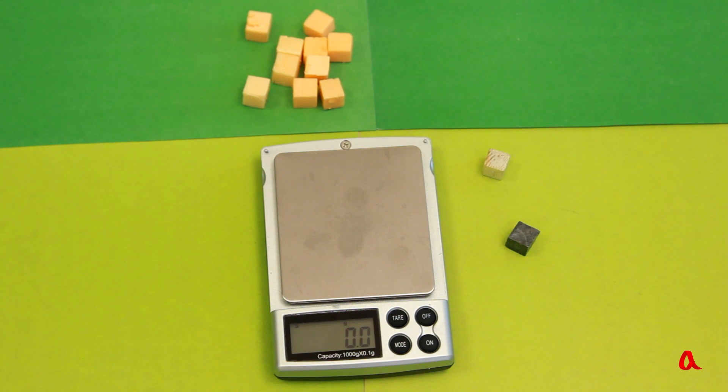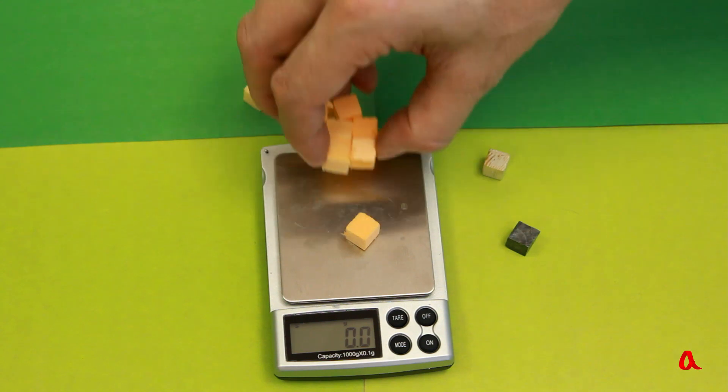Let us now try to figure out the density of foam. We are trying to weigh a piece of foam 1 cubic centimeter in volume. Well, our scales show us nothing at all. It is far too light.